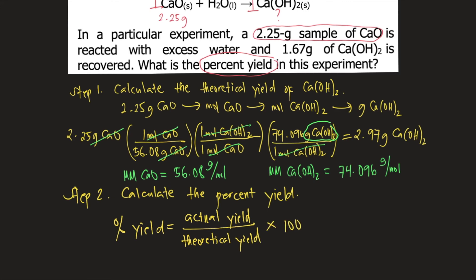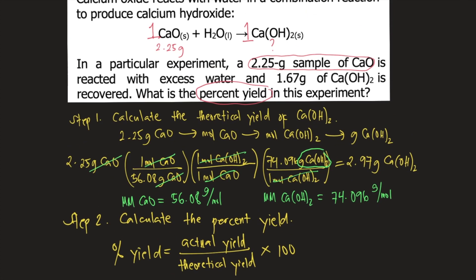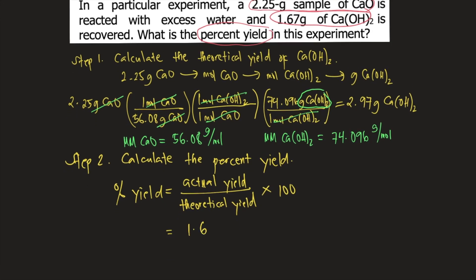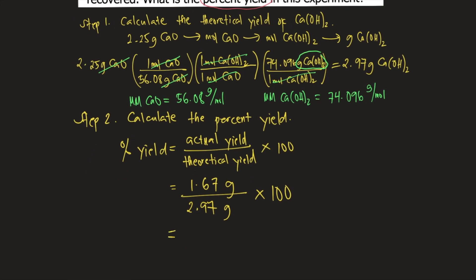According to the problem, the actual yield of calcium hydroxide is 1.67 grams. So we put 1.67 grams as the actual yield, divided by the theoretical yield we computed in Step 1, which is 2.97 grams, times 100. Solving this: 1.67 divided by 2.97 times 100 equals 56.2%. This is the answer to the question.